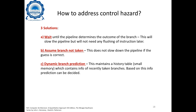Now let us discuss how to manage control hazards present in the MIPS pipeline. There are three solutions. The first solution is to wait — wait until the pipeline determines the outcome of the branch, because the branching process must compute the equality test between two registers, find the effective target address using the ALU, and more. While this will slow down the pipeline, the benefit is that it will not require any flushing of instructions later.